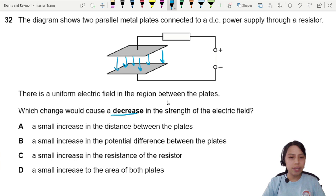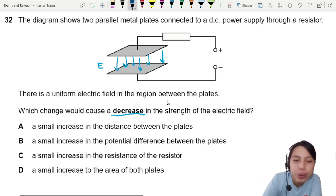What change will cause a decrease in the field strength? It becomes weaker. So when there's parallel plates, it's really nice because we have an equation that describes parallel plates: E equals V over D.